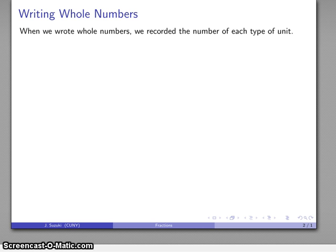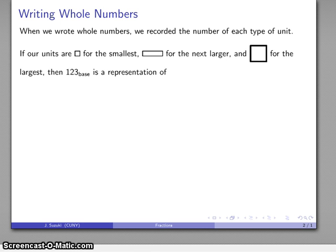When I write whole numbers, what we do is record the number of each type of unit. If I'm using this little square for my smallest unit, this for the next larger, this for the largest, then if I write down 123 in whatever base, I'm saying reading from right to left: I have three of the smallest unit, two of the next larger unit, and one of the largest unit there. This is an abstract representation of that quantity. Three of the smallest, two of the next larger, one of the next larger.